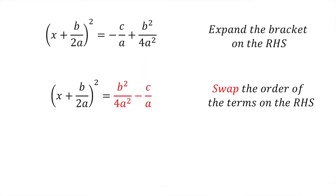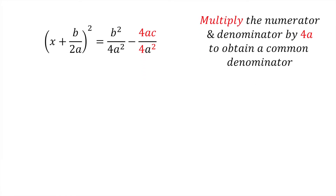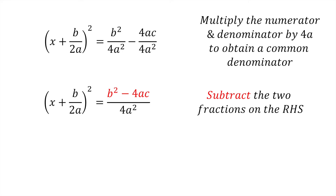Now swap the order of the two terms on the right hand side, giving us b squared divided by 4a squared minus c divided by a. Next, we subtract the two fractions on the right hand side, but first we need them both to have a common denominator of 4a squared. We do this by multiplying the numerator c and the denominator a of the second fraction by 4a. The right hand side now becomes b squared divided by 4a squared minus 4ac divided by 4a squared. Now we can subtract the two fractional terms, giving us b squared minus 4ac all divided by 4a squared.